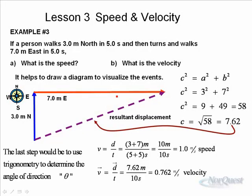So the last step would be use trigonometry to determine the angle of direction. We won't do that right now, but to figure out this angle of deflection, we would use some simple sine, cosine, tan types of trigonometry.